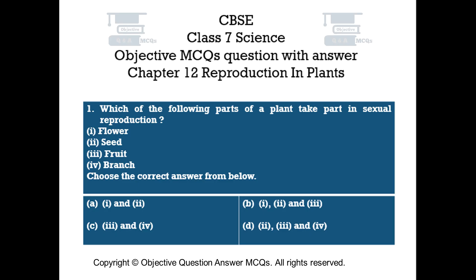Question number 1. Which of the following parts of a plant take part in sexual reproduction? 1. Flower. 2. Seed. 3. Fruit. 4. Branch.